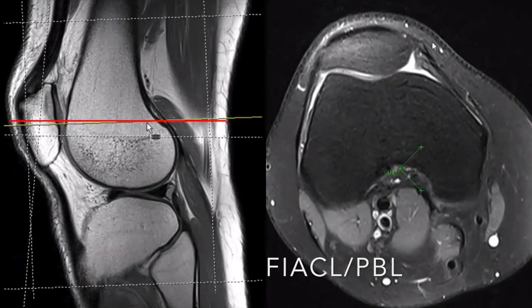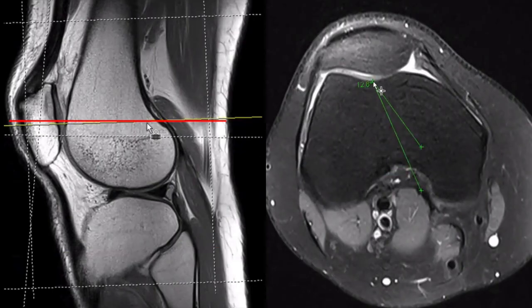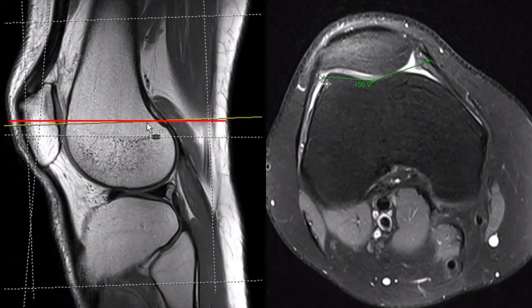We will use these reference lines to consistently measure, always at the same anatomical level, the different variables used to assess trochlear dysplasia.